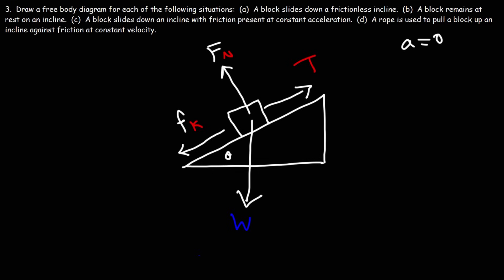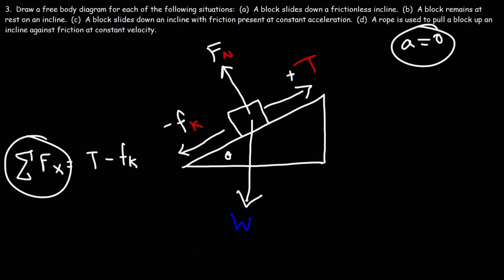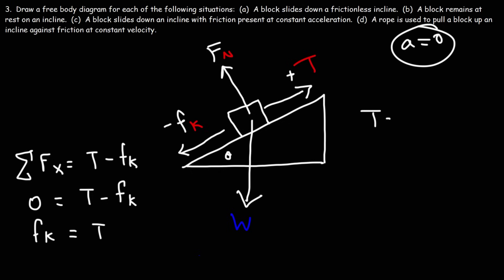To calculate the tension force, the sum of forces in the x direction is positive T minus fk, which equals zero since acceleration is zero. Therefore, T equals fk. And fk is mu k times the normal force. The normal force on the incline is mg cosine theta. So for this problem — pulling a block up an incline against friction at constant velocity — the tension force is mu k times mg cosine theta.